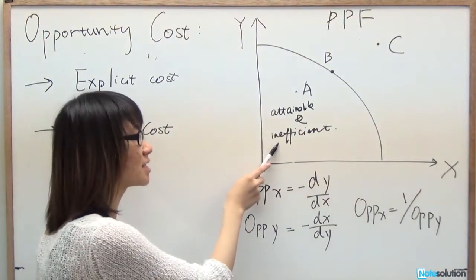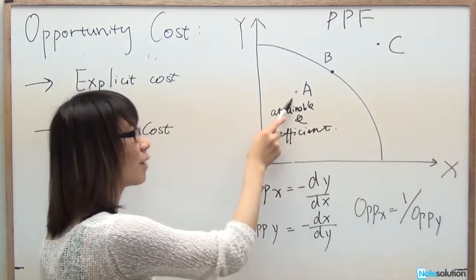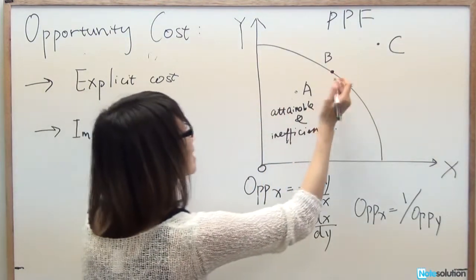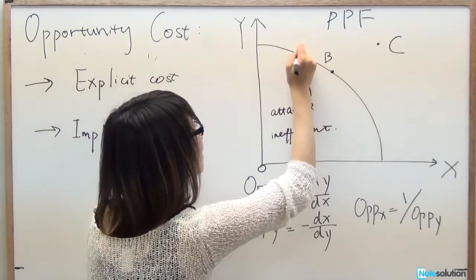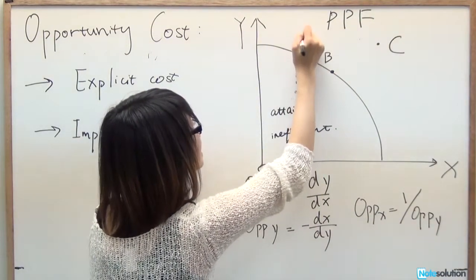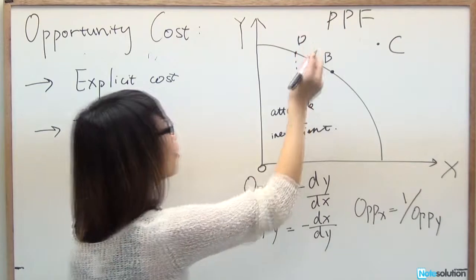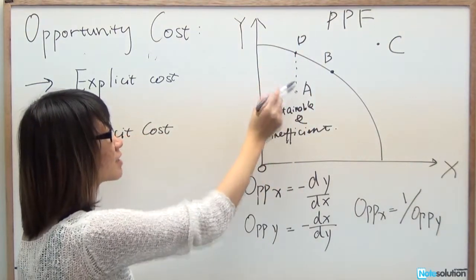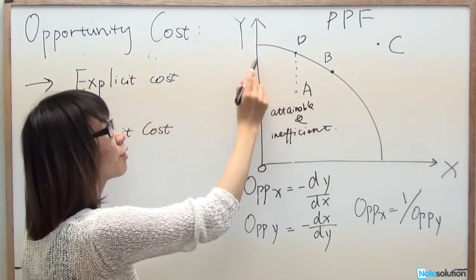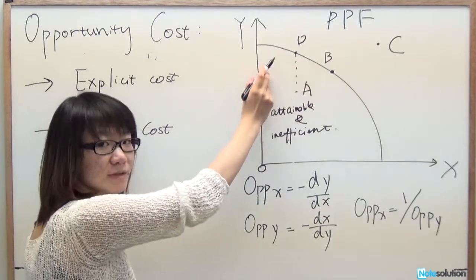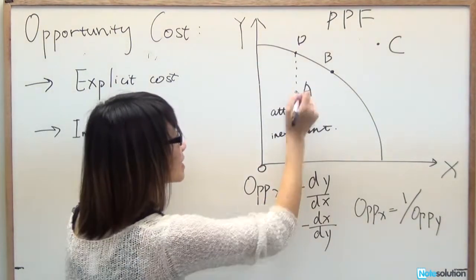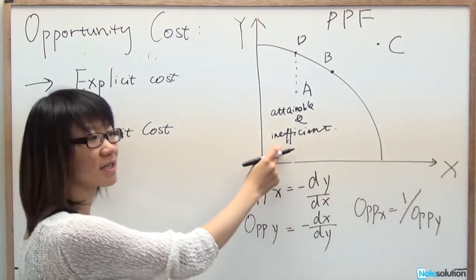Point A is not efficient because if you move up to the line and get to point D, you consume the same amount of X but can consume more Y by using up the resources you have. That is why point A is attainable but not efficient.